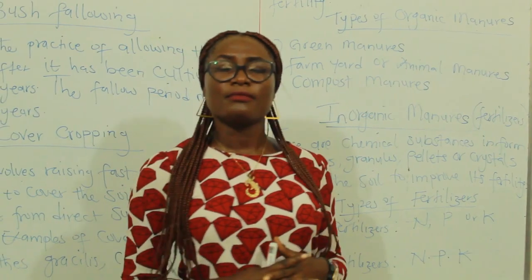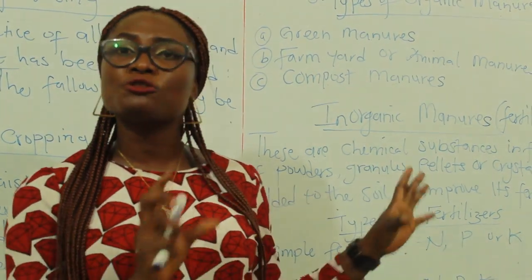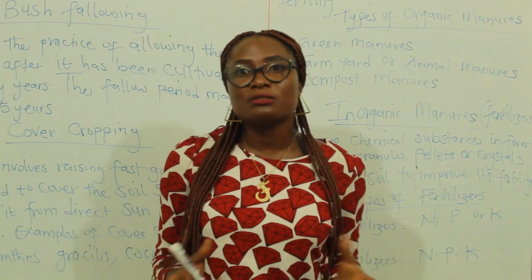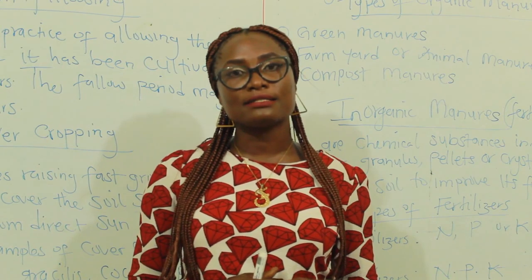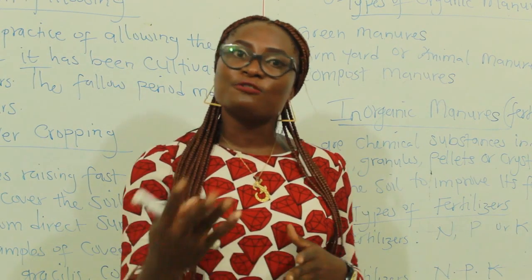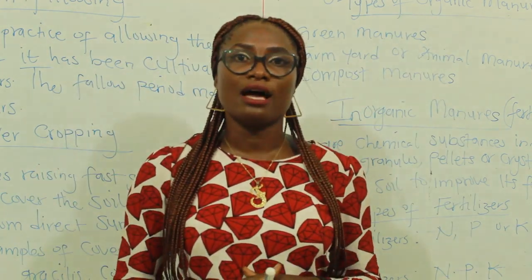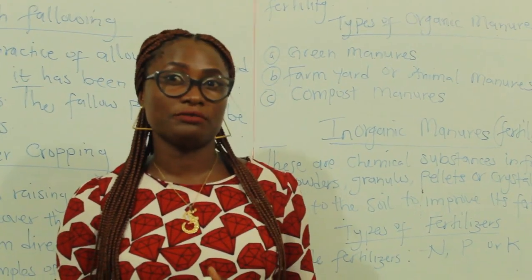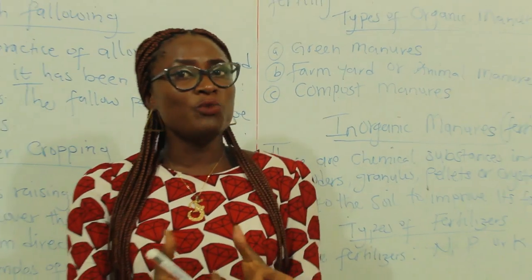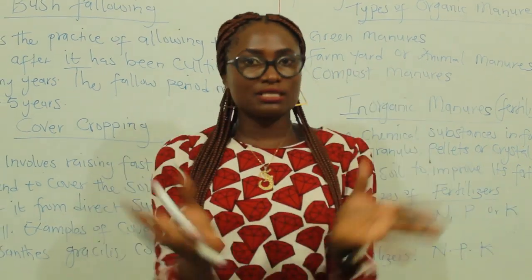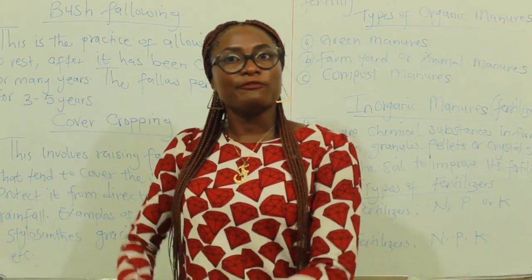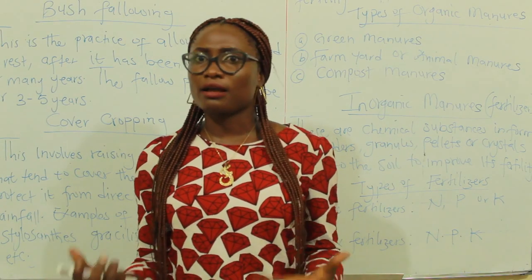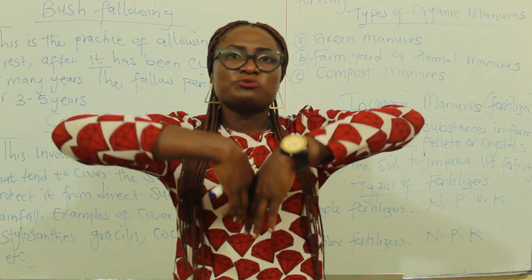Compost manures are actually gotten from combining the two types of manures we've treated: green manures and animal manures together. In compost manures, you could have your succulent plants, your animal dung, your kitchen waste — all combined together. Usually a pit is dug for the compost manures. You gather your succulent plants, animal waste, and kitchen waste, mix them together, put them in the pit, and allow them to decay for some time. Later on, you can go back to that pit and start digging them out and spread them on your farm.